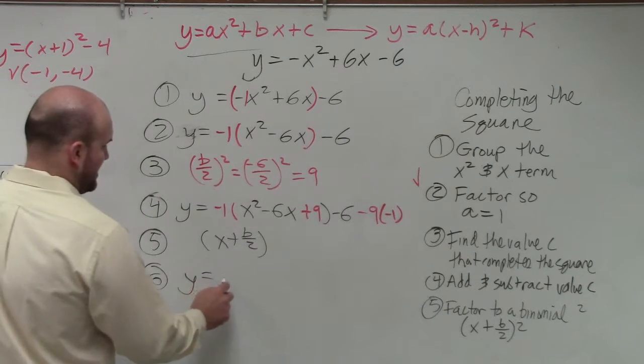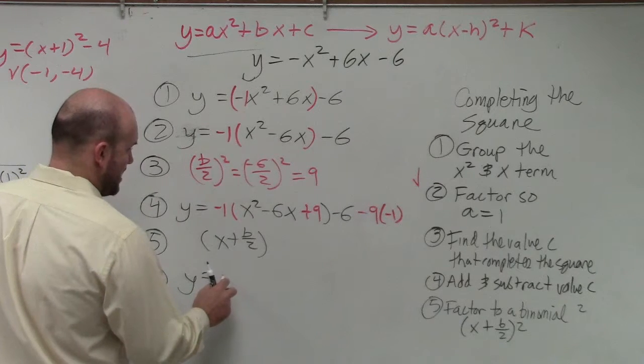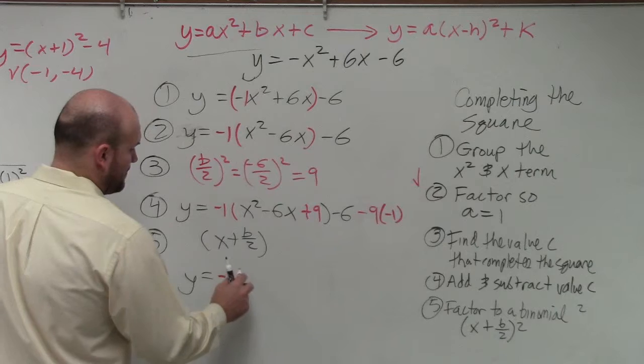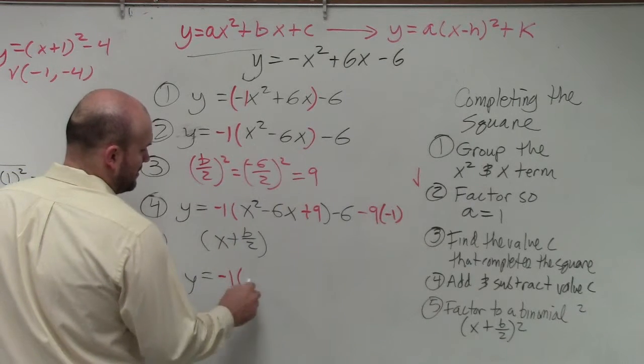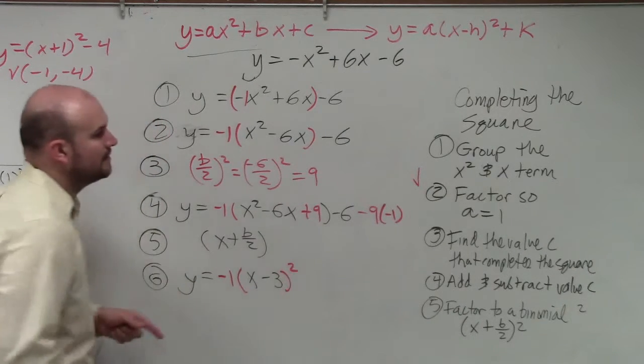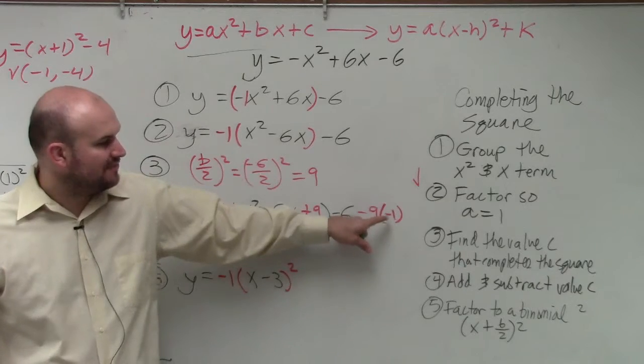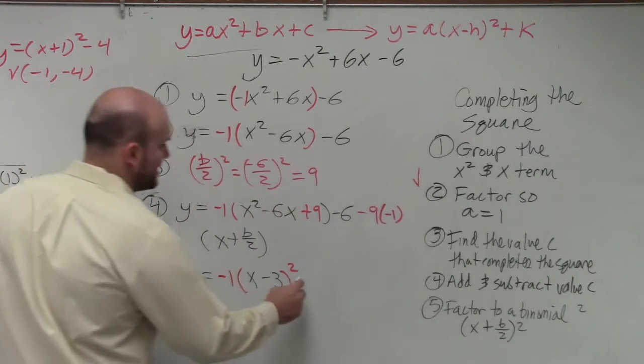So now we have negative 1 times this is x minus 3 squared. Negative 9 times negative 1 is positive 9. Positive 9 minus 6 is going to be a positive 3.